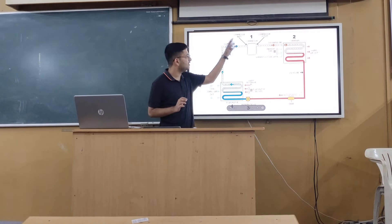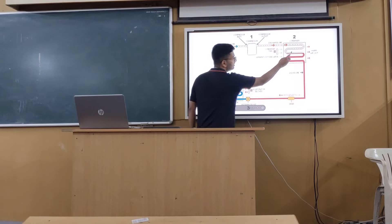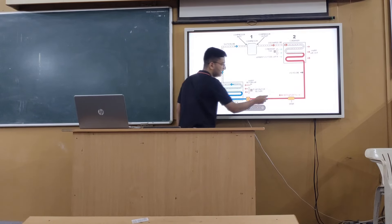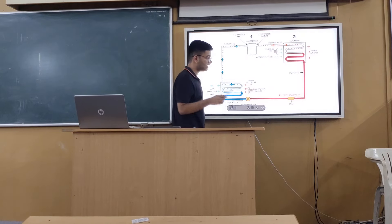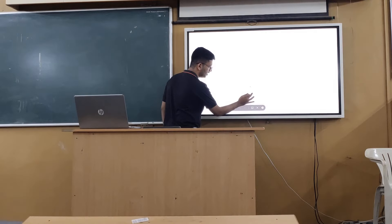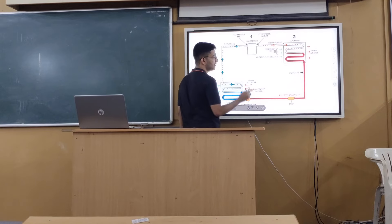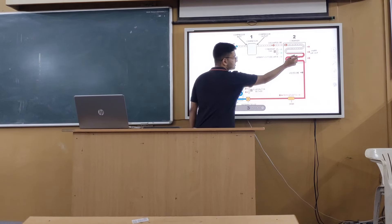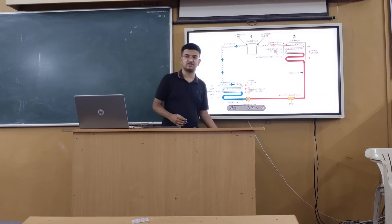This is the schematic of the total system. Whatever red is appearing indicates high pressure and high temperature. Blue indicates low temperature. Dotted lines indicate the vapor state of the refrigerant, and continuous thick line indicates the liquid nature of the refrigerant.